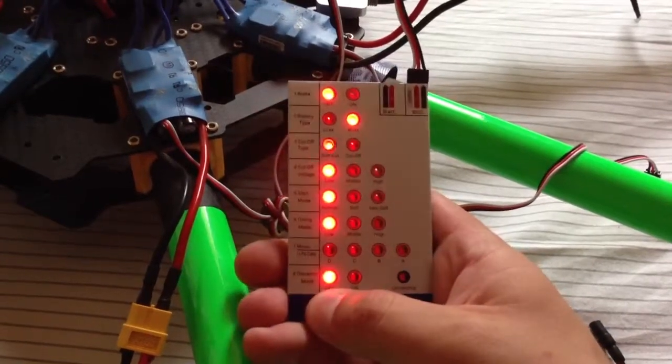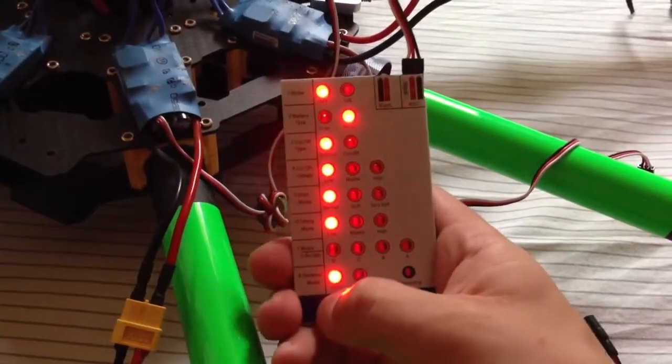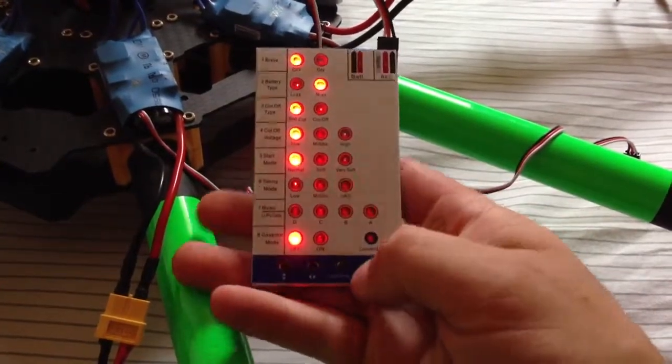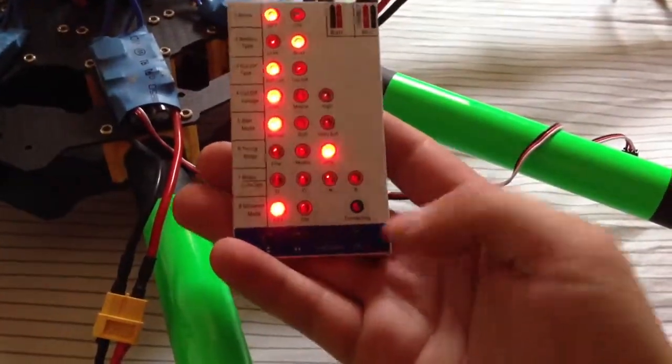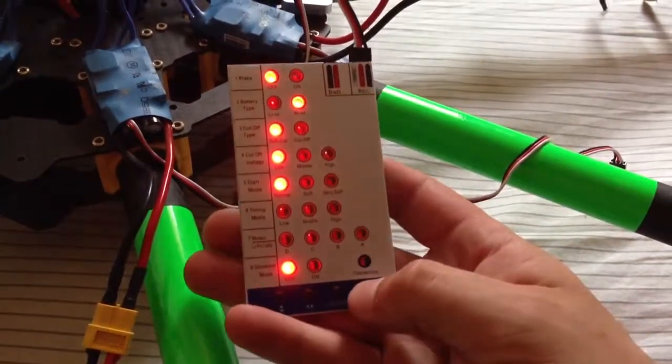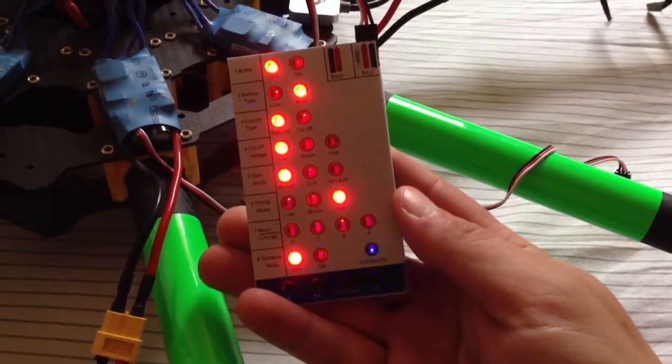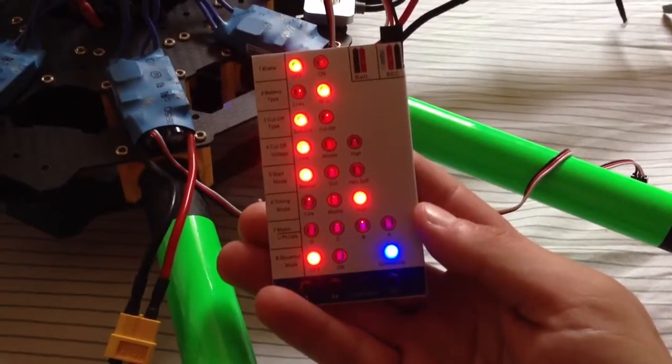So just for demonstration purposes, I'm gonna go ahead and get it set up the way I want to. Once I have the settings that I want, I hit OK and nothing happened. The connecting light just sits there blinking, no action, no programming, nothing.